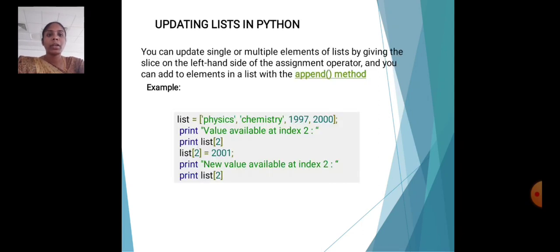Updating a list in Python. You can update single or multiple elements of the list by giving the slice on the left-hand side of the assignment operator, and you can add to elements in a list with the append method. List physics, chemistry, 1997, 2000. Print value available at index 2, print list[2]. List[2] equals 2001. Print new value available at index 2, print list[2].